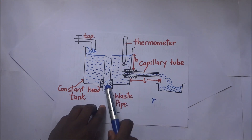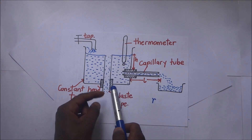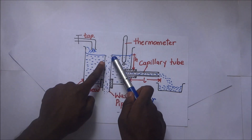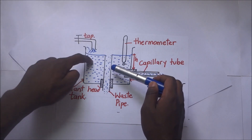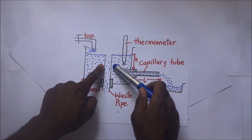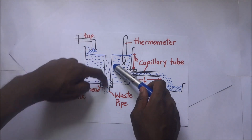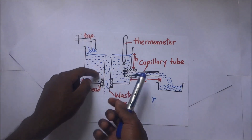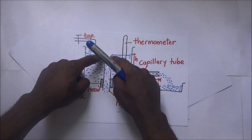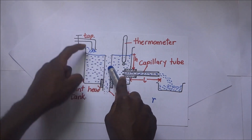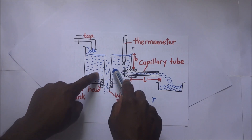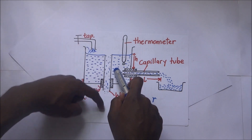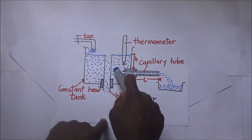We also have what we call the waste pipe. This waste pipe can be pushed up or down. If you push it up, the water coming in will have to rise to that level of the pipe before it flows out to be wasted. If you pull it downwards, the water flowing into the constant head tank will have to rise to the level of that pipe and then flow back out.